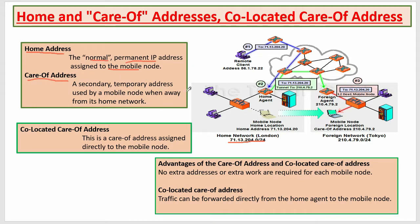What is meant by care-of address? When for some reason we are not available at home and are in another place — the foreign network — our permanent IP will not work because the network prefix is different there. So we have to get a temporary address. This second temporary address used by the mobile node when it is away from its home network is called the care-of address.